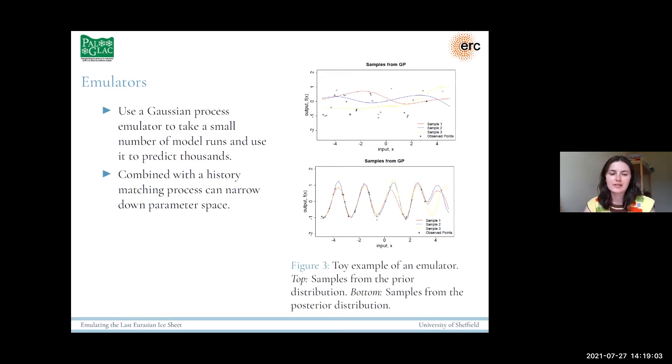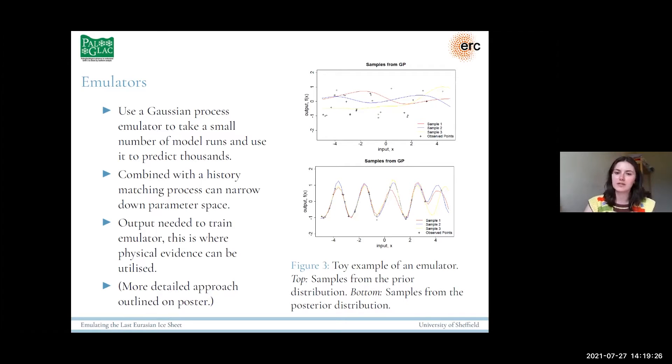We'll use this framework in combination with a history matching process, which is a way of scoring how well a certain input can give you a certain output to narrow down our input parameter space. We need an output to train the emulator, which is where we want to incorporate using the physical evidence that we have available. I have a more detailed approach of this on my poster, but as I've only got 10 minutes, I want to focus on other things for now.